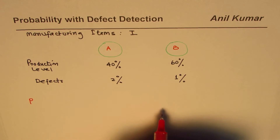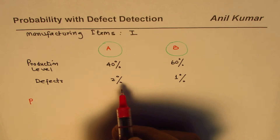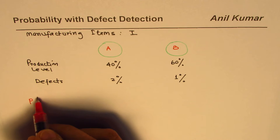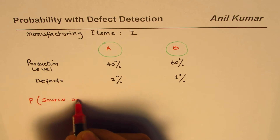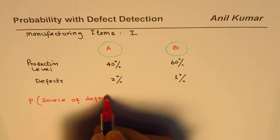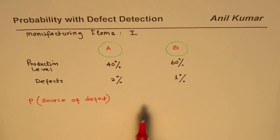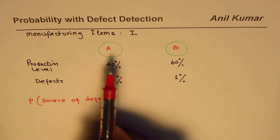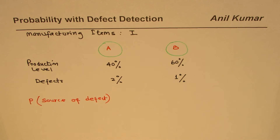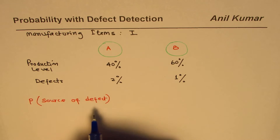The idea here is to find the probability that a defective item came from a particular source. We want to find the source of the defect. We check a sample and that sample is found defective — we want to find the probability of its source, whether it came from machine A or machine B. That is the question we are examining in this video.